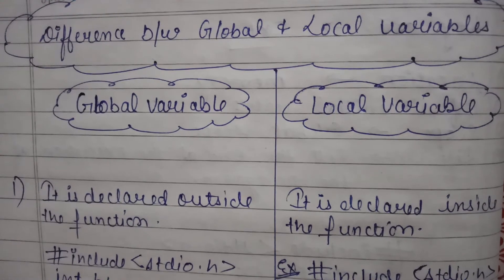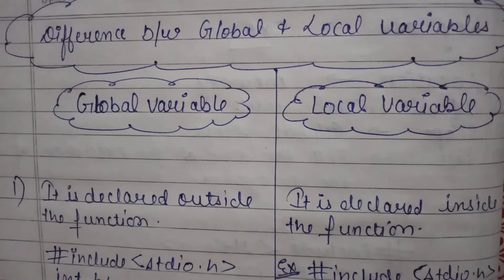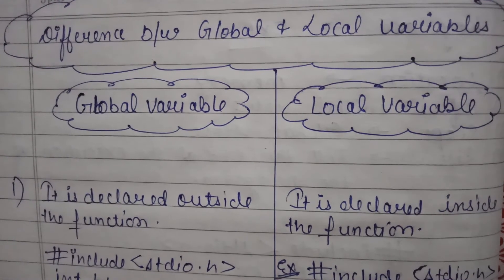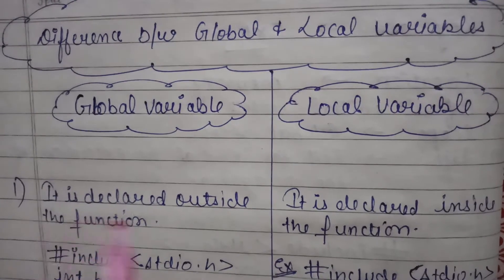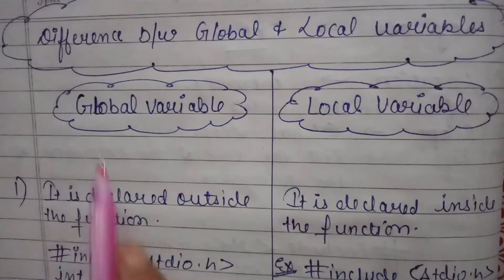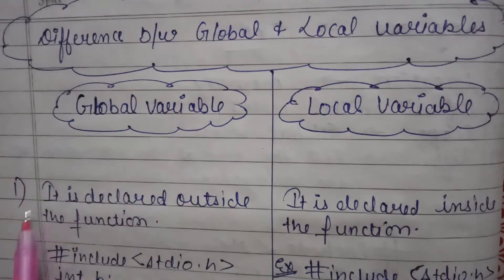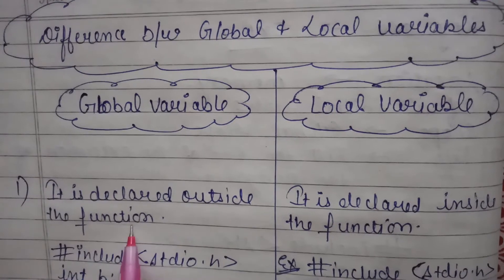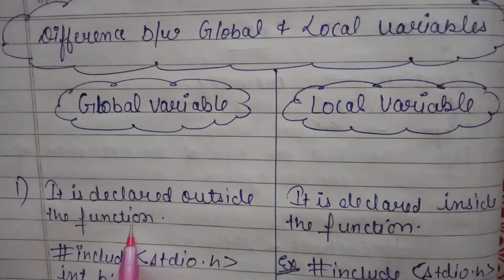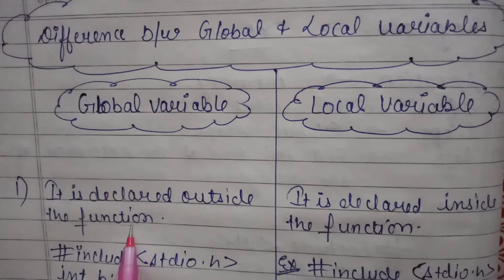Those variables are globally defined. So the first difference is: global variables are declared outside the function. We declare them outside the function, unlike local variables which are declared inside.